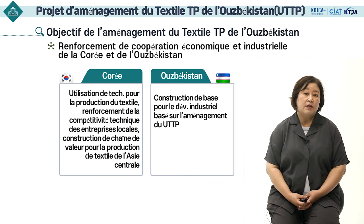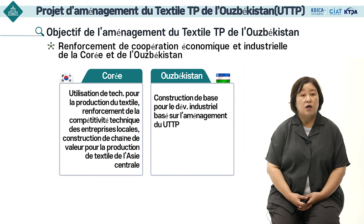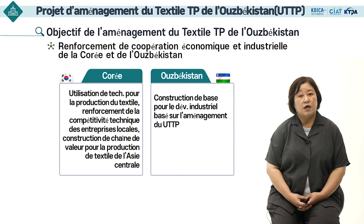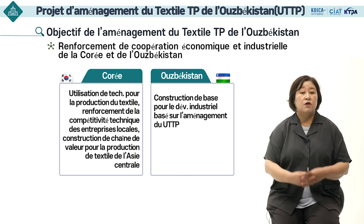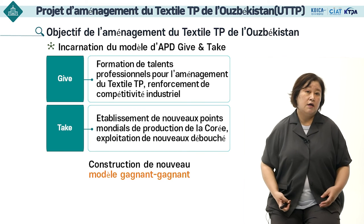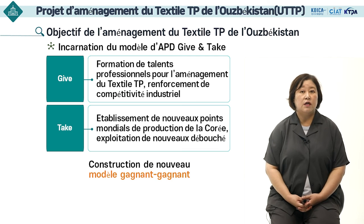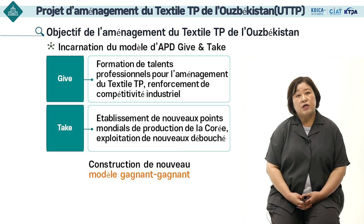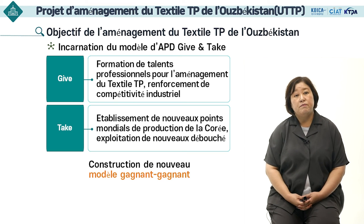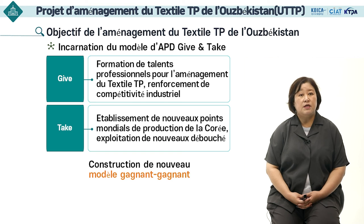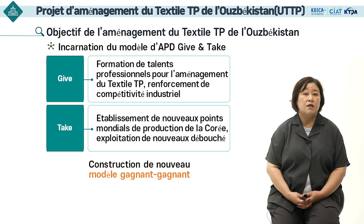Le but de ce projet est de renforcer la coopération industrielle et économique entre la Corée et l'Ouzbékistan. En Corée, nous utilisons la technique de production textile, offrons une compétitivité technique aux entreprises locales et établissons une chaîne de valeur de production textile centrée sur l'Asie centrale. L'aménagement du textile technoparc jettera les bases de la croissance de l'industrie textile en Ouzbékistan, construisant un modèle gagnant-gagnant avec l'avantage d'être pionniers sur de nouveaux marchés de l'Asie centrale et en Russie.